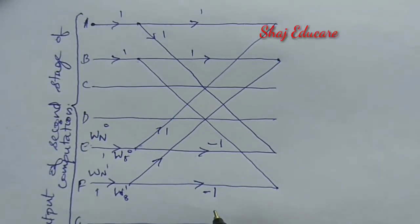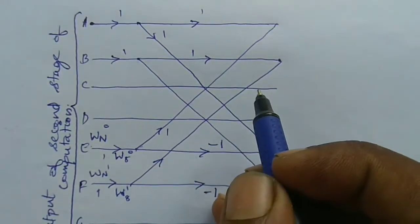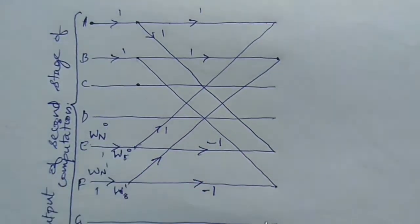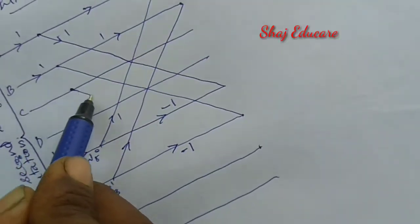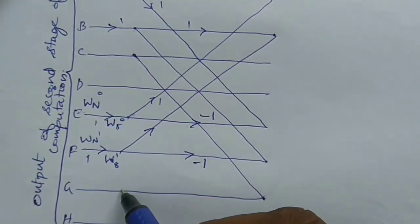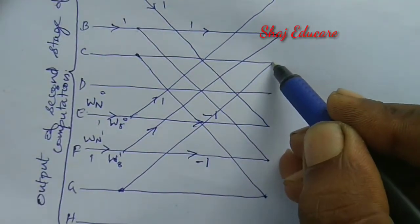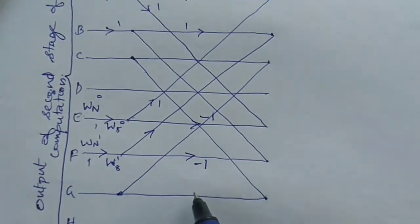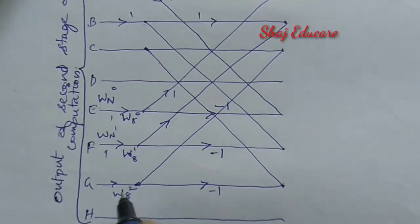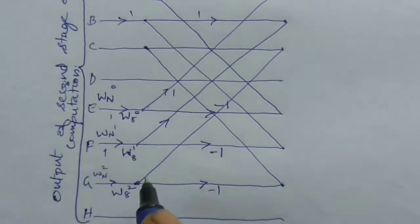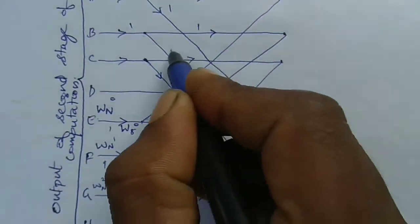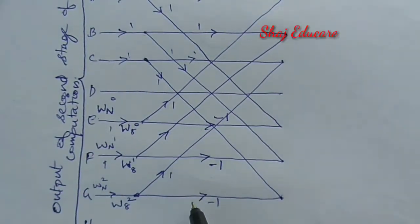Now draw the connection from C to G, and complete the connection from G back to C. Put the gain as minus 1, and the phase factor is W8 raised to 2, that is Wn raised to 2. Mark the arrows — this is going downward — and all other gains should be equal to 1, except this one.